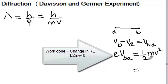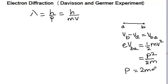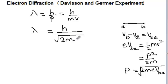So, this can be written as p square over 2m because p is equal to mv. So, now we can write the momentum p as square root of 2m e vba. So, now you can write the de Broglie wavelength lambda as h over square root 2m e vba.